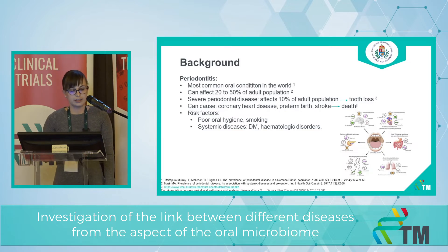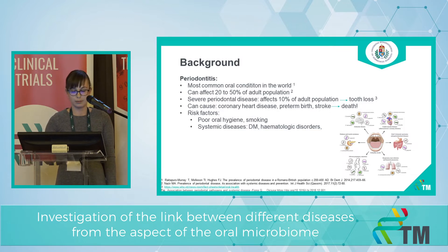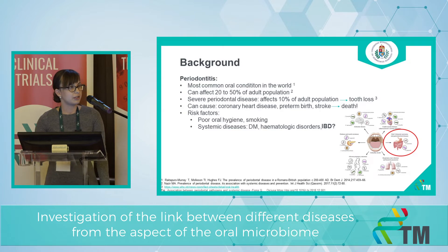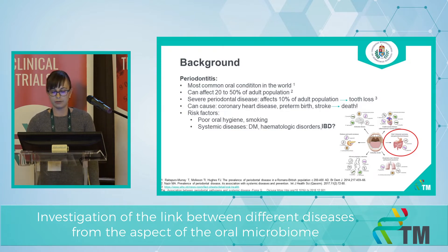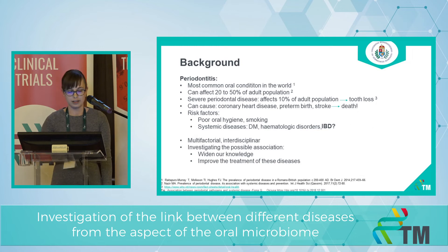We know that there are several risk factors for developing periodontitis. Some of the most well-known are poor oral hygiene and smoking. But it is also proven that there are systematic diseases which are risk factors for developing periodontitis, such as diabetes mellitus and hematologic disorders. Our main question is whether inflammatory bowel diseases could be a risk factor for developing periodontitis, and also in the other direction, whether periodontitis might be a risk factor for developing IBD.